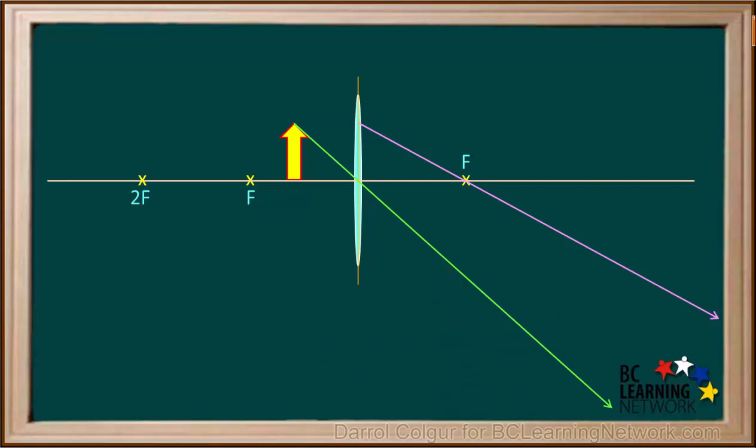But if we extend this purple line backward with a dotted line like this, and the green line backward with a dotted line like this, they will cross right at this point.